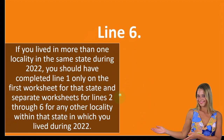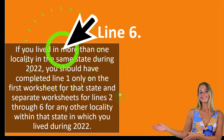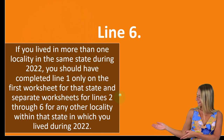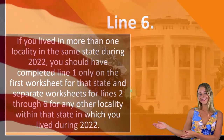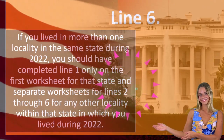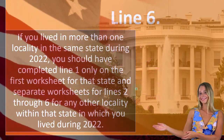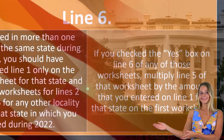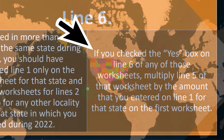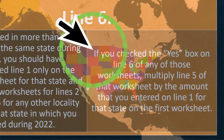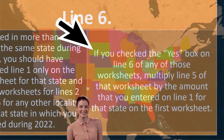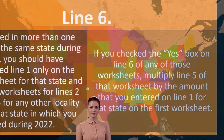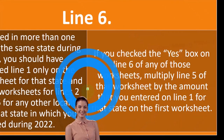Line six: if you lived in more than one locality in the same state during 2022, you should have completed line one only on the first worksheet for that state, and completed separate worksheets for lines two through six for any other locality within the state. If you check the yes box on line six of any of those worksheets, multiply line five of the worksheet by the amount entered on line one for that state on the first worksheet.